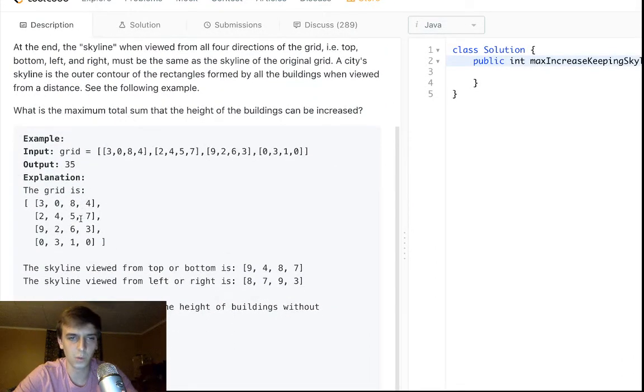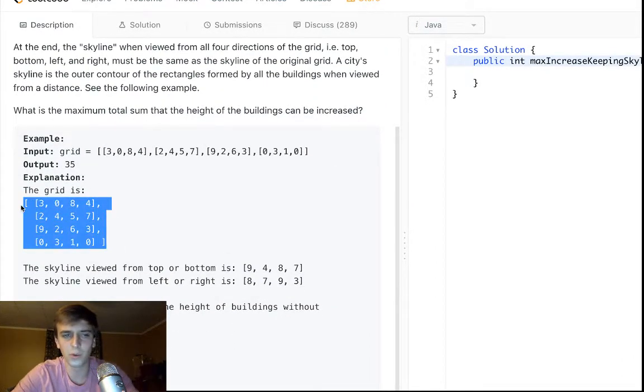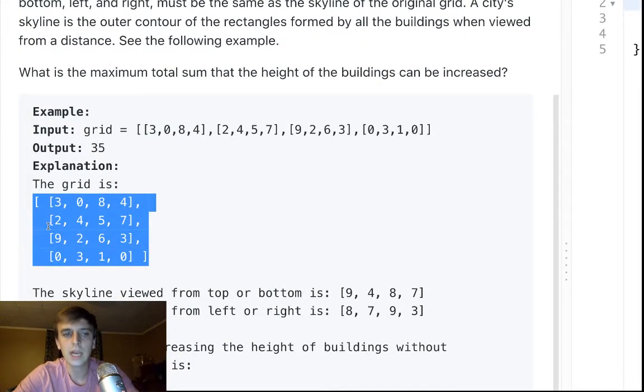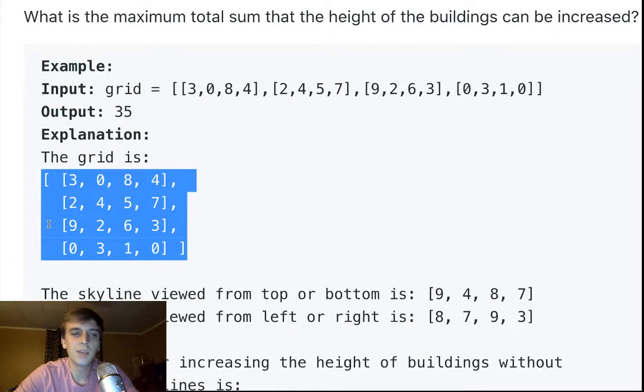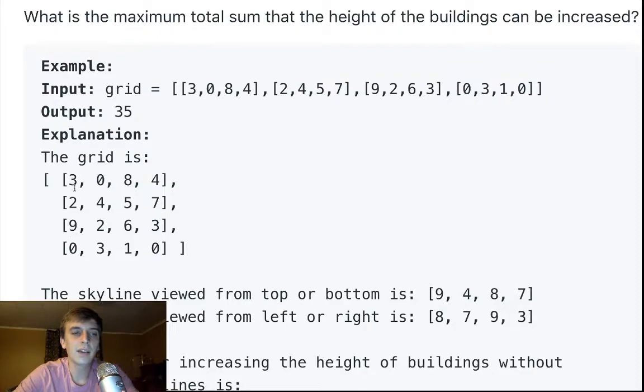So this might seem confusing, what is a skyline? We're looking at a 2D array, there's buildings. What they mean is the highest, the maximum value in each column has to stay the same, and the maximum value in each row has to stay the same.